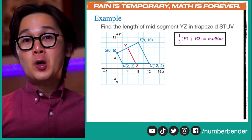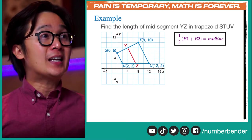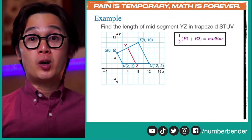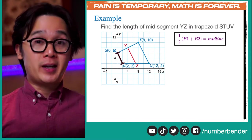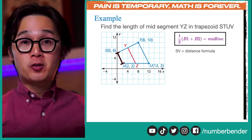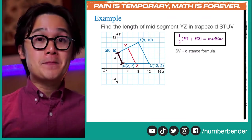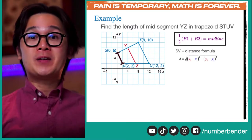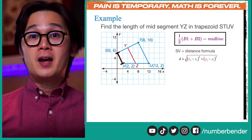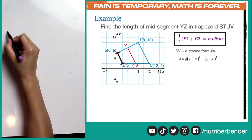To find the bases so we can use the midline formula, we're going to use the distance formula from point S to point V, and from point T to point U. The distance formula uses the square root of the difference of the X-coordinates squared plus the difference of the Y-coordinates squared. Make sure you still remember this basic formula for measuring distance given XY coordinates.